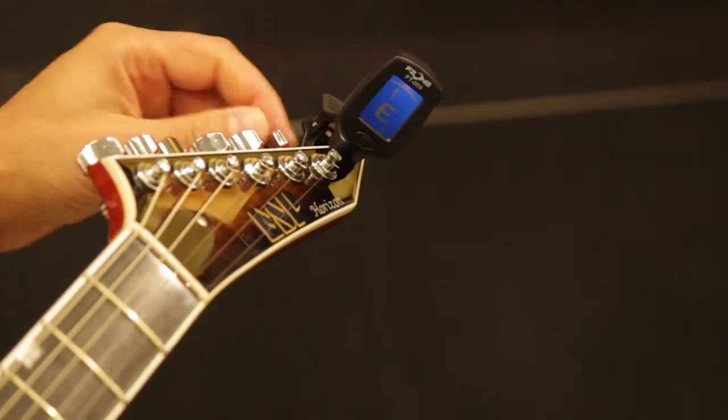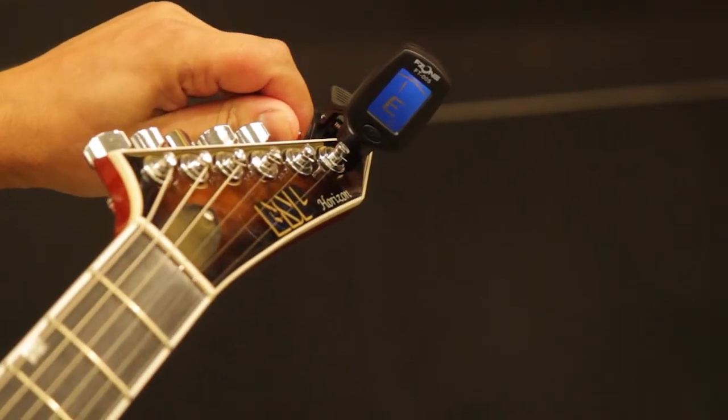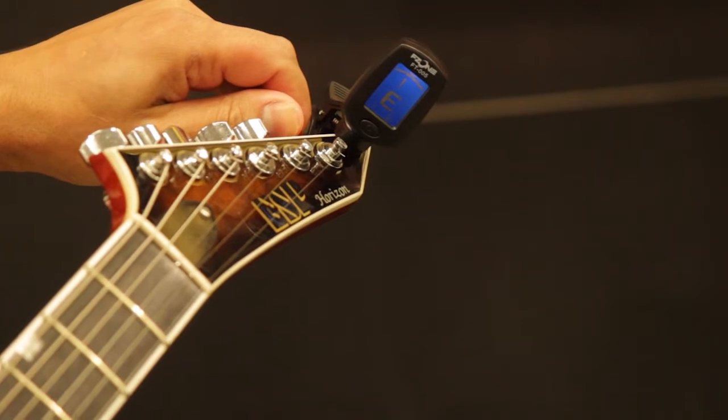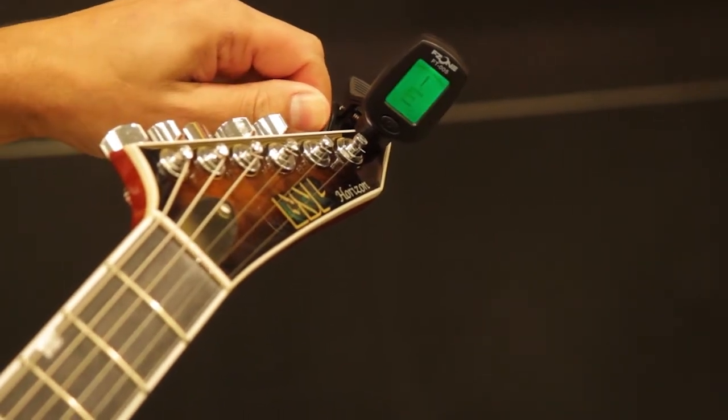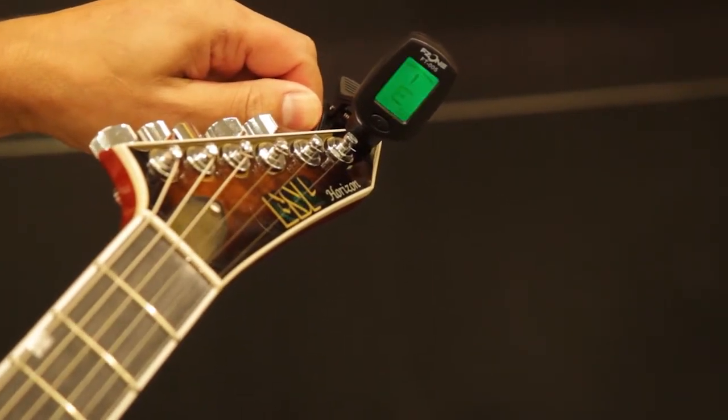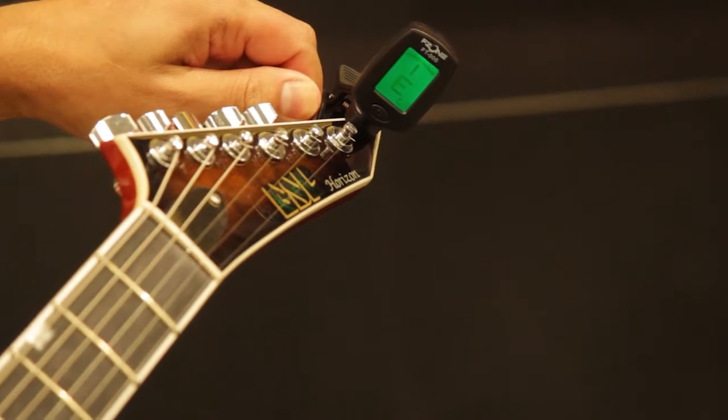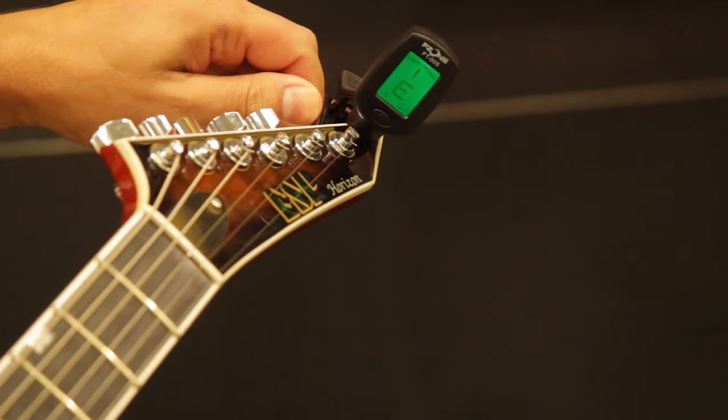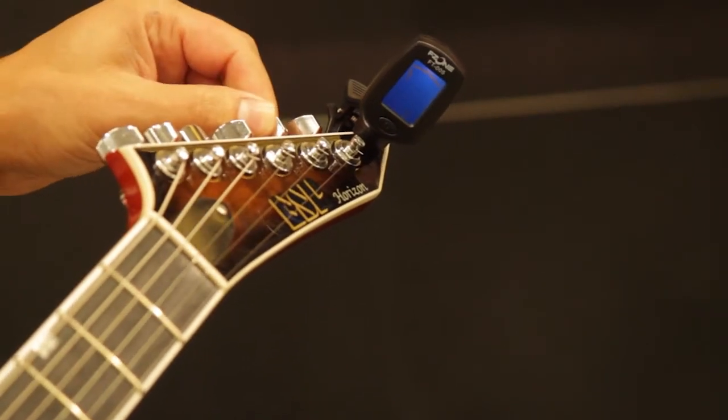So you continue picking that and you sharpen or turn the key upwards until you see green appear or the needle is positioned in the middle. Once you do that, you know that the first string, which is E, is tuned. And you continue to do that for the rest of the strings.